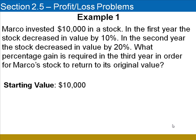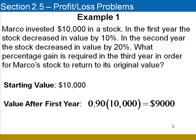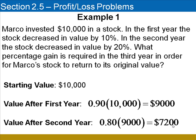We'll begin by listing the starting value, which is $10,000. In the first year, the stock decreased in value by 10%. Another way to think of this is that it retained 90% of its value. Multiplying 90% by the starting value shows us that the value after the first year is $9,000. In the second year, the stock decreased in value by 20%, meaning that it held 80% of its value. Multiplying $9,000 by 80%, we see the value after the second year is $7,200.